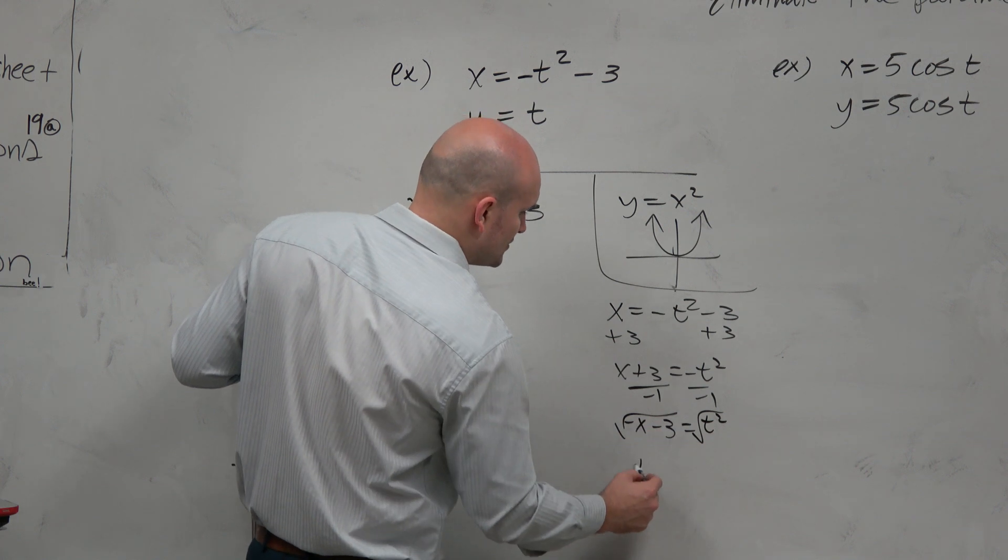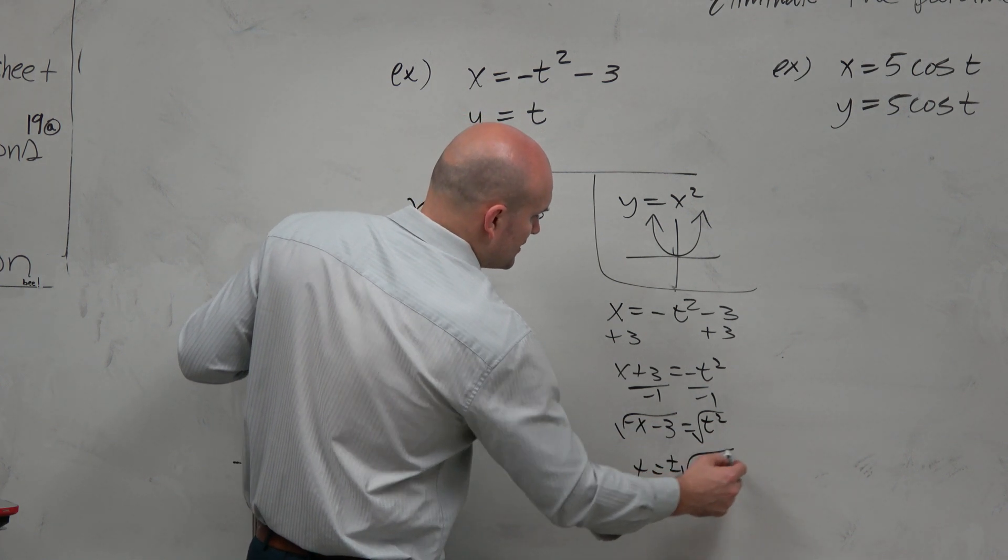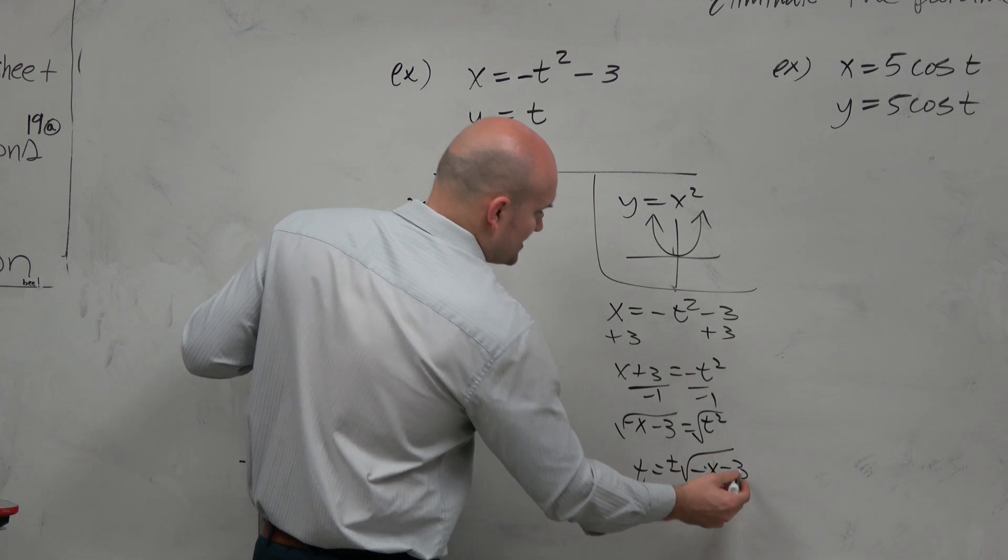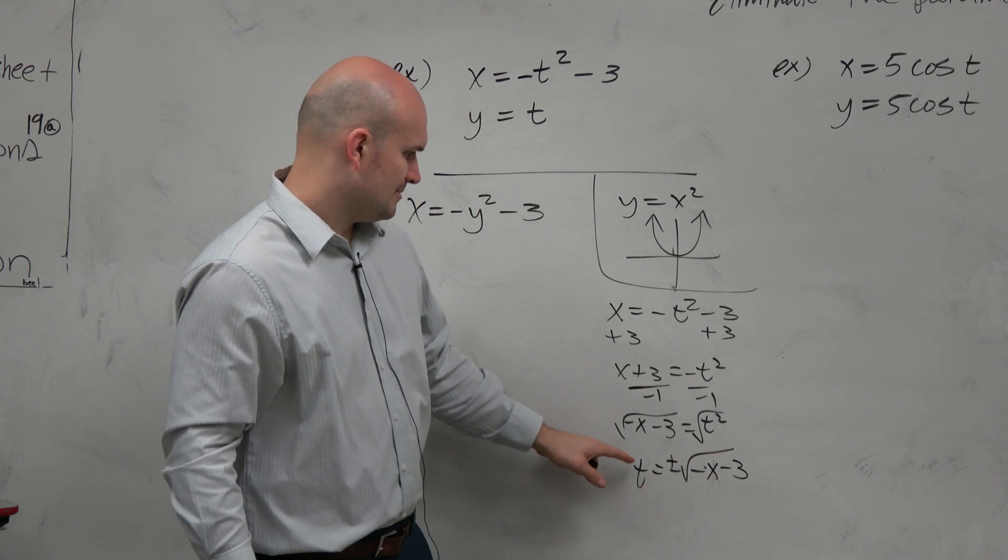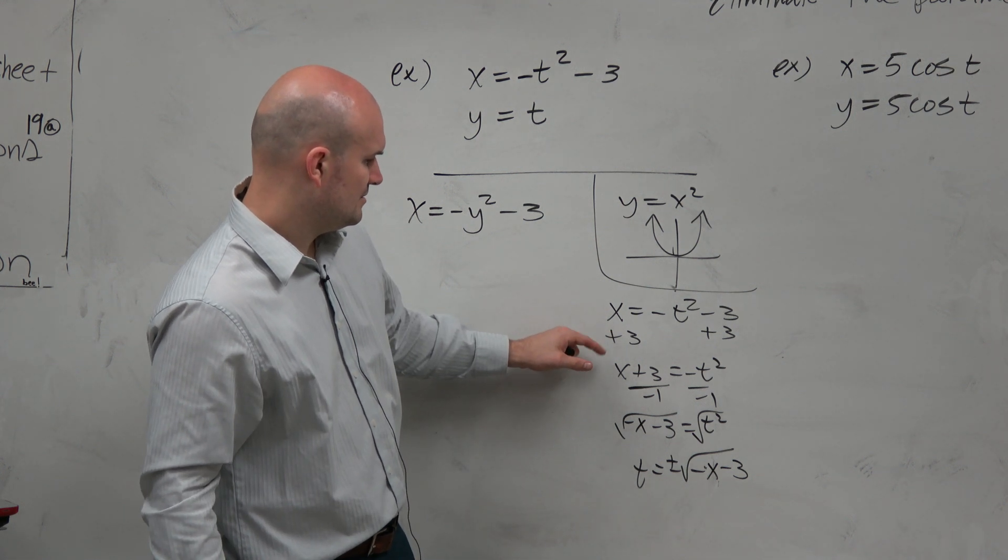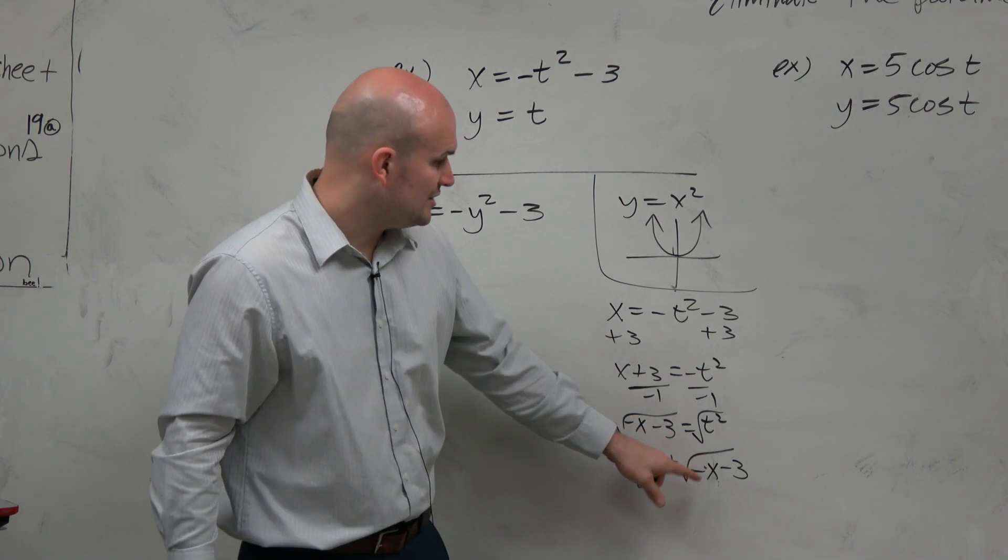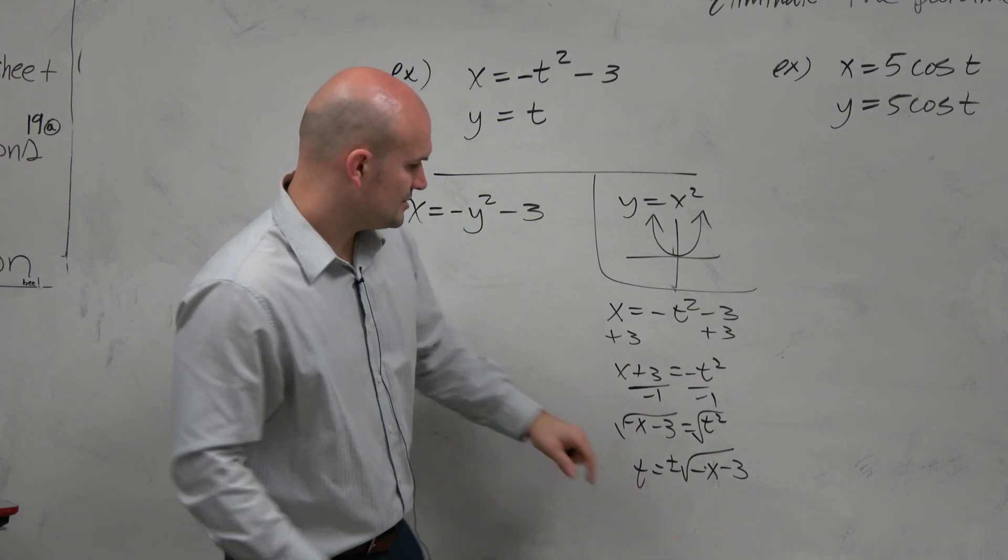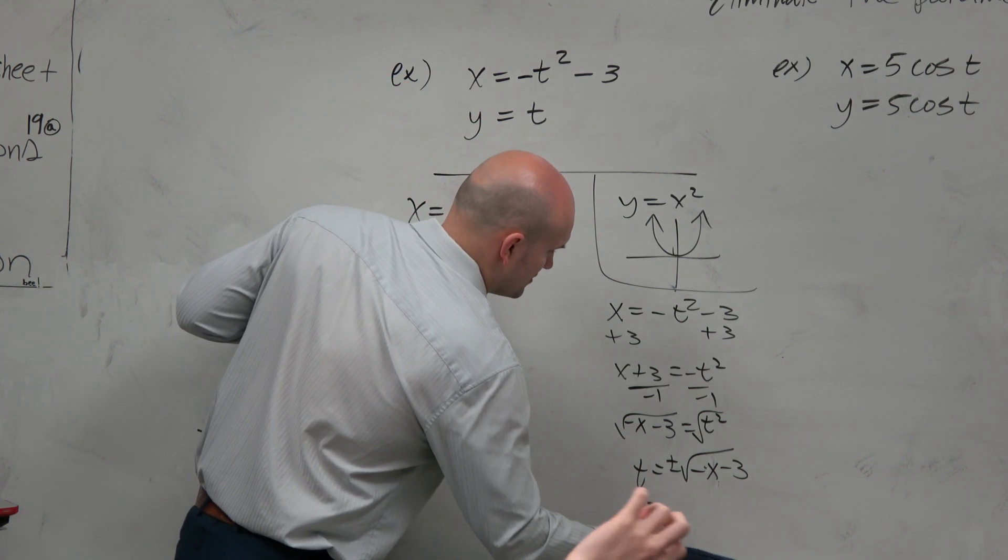Square root both sides. So t = ±√(-x - 3). What am I doing? Solving for t, right? Yeah, solving for t. And then you could plug that in here - plug the t in there. So therefore, y equals that.